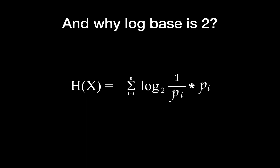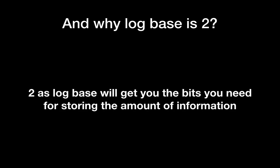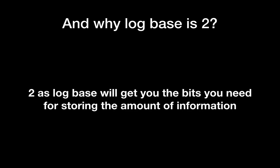Some people ask why the log base is 2. Well, 2 as a log base will get you the bits you need for storing the amount of information. For example, if your random variable can have 4 different results, you will need 2 bits, as you can see from the table in this slide. By using 2 as a log base, you can get exactly the same bits as max entropy.